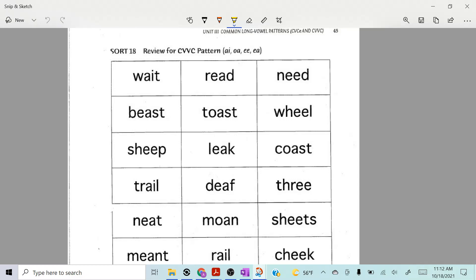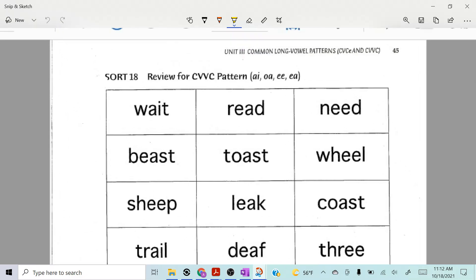What they're focused on is the consonant vowel vowel patterns. The vowel patterns are going to be ai, oa, ee, and ea.